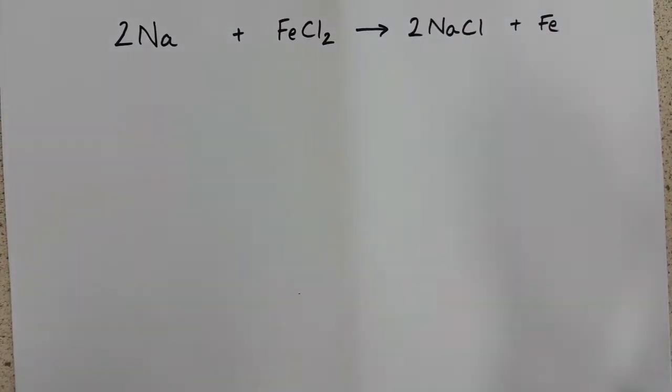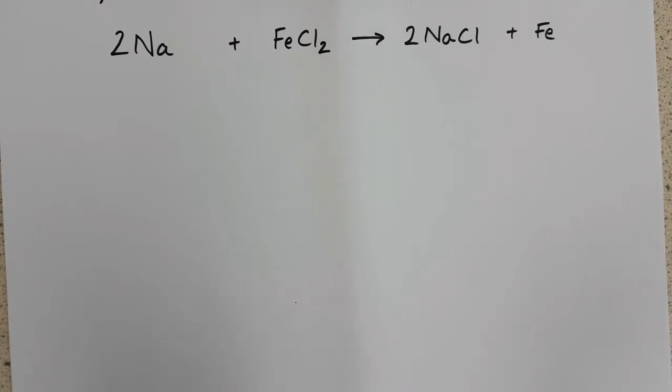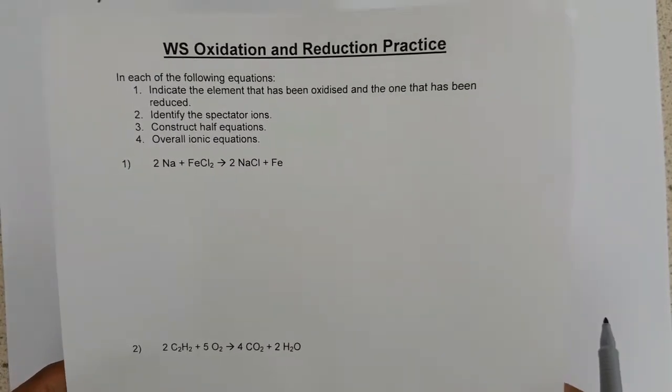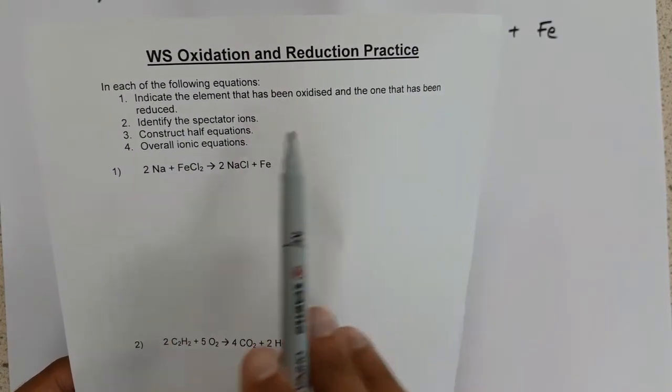Question 1. The reaction of sodium and iron chloride to form sodium chloride and iron. This is an example of a displacement reaction. And if we look back at the instructions, the first step is to indicate which element has been oxidized and the one that has been reduced.